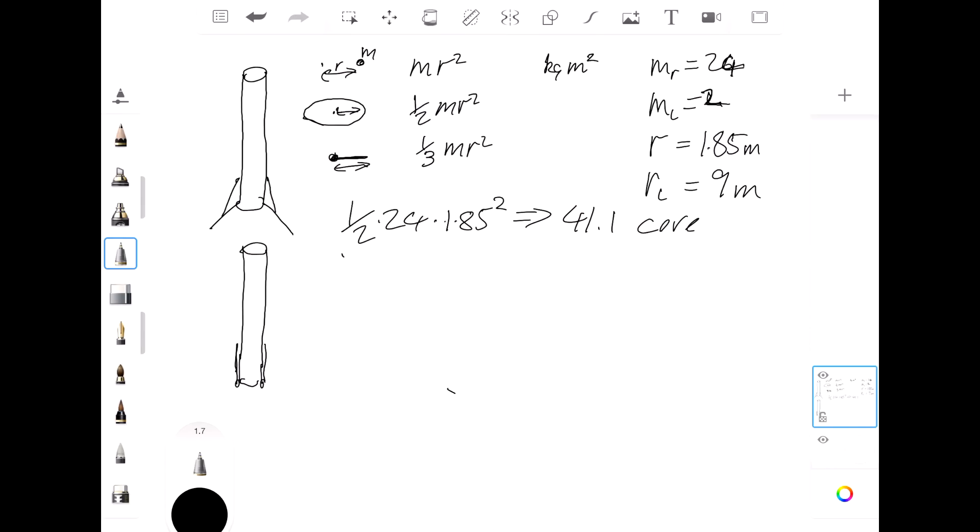So now the legs that are stuck against the side—they are basically like a point mass stuck at 1.85 meters, so that becomes 2 times 1.85 squared, and that gives us 6.85. So these two together means that before we deploy the legs, the moment of inertia is about 48, and that is in tons per meter squared. So it could be 48,000 kilogram meter squared if you want to work in conventional Newtonian units.